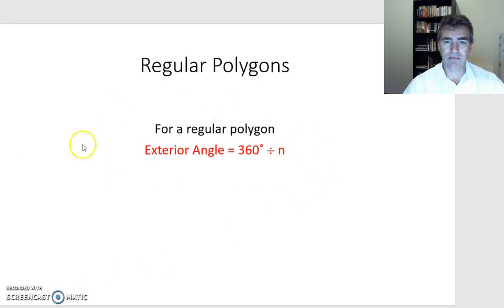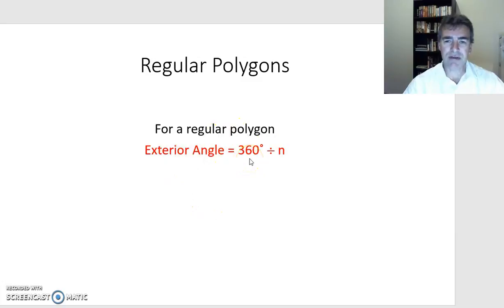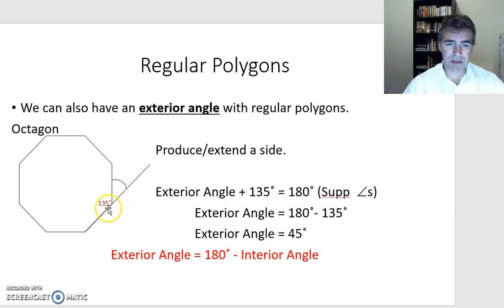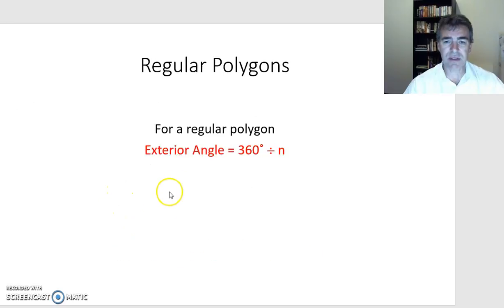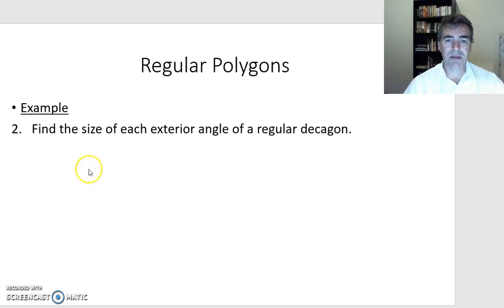So the exterior angle equals 180 degrees minus the interior angle. After doing the algebra, for any regular polygon there's a shortcut: the exterior angle equals 360 degrees divided by the number of sides. So I don't have to find the interior angle first unless I'm specifically asked to — I can go straight to 360 ÷ n.